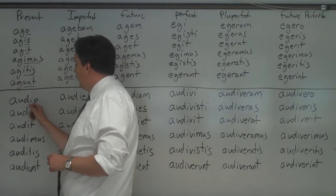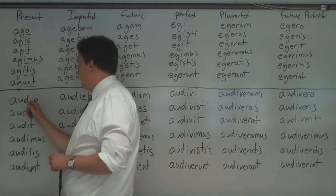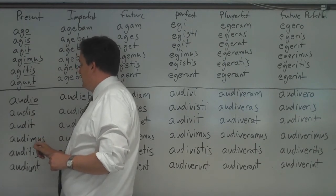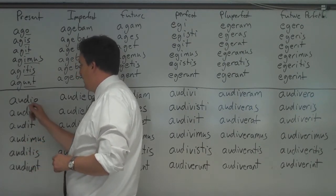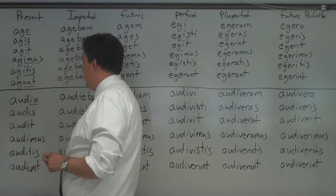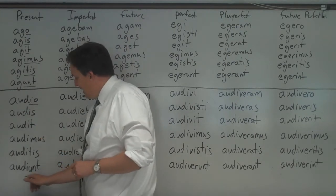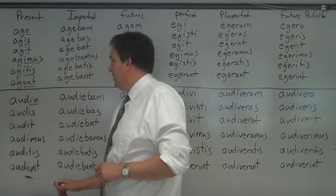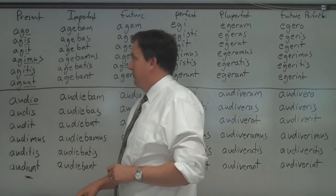And if it's an IO verb — that's the fourth — it works the same way: io, is, it, imus, itis, iunt. So: audio, audis, audit, audimus, auditis, audiunt. Watch out — it has the I and the U down here, where the third just has the U.